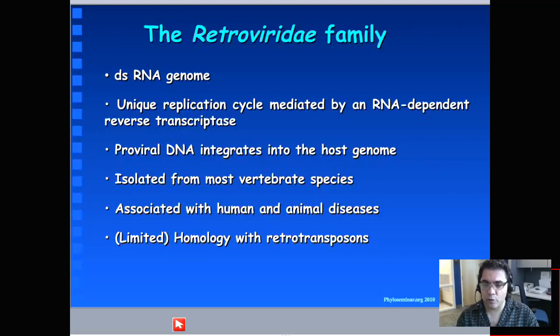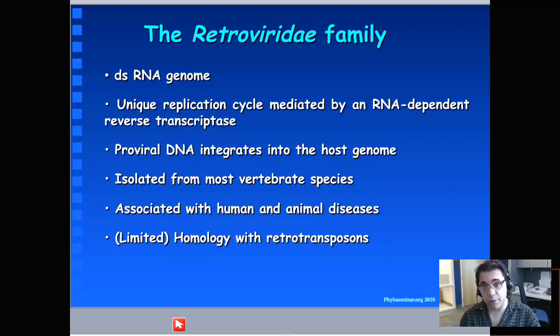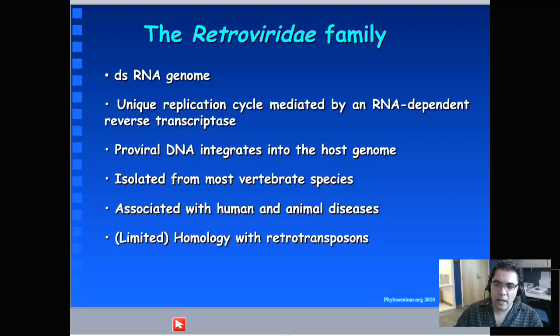They have a single-stranded RNA genome, but they are actually diploid — each virion contains two copies of RNA. They have a unique replication cycle mediated by the RNA-dependent reverse transcriptase, and they are pretty ubiquitous in nature, isolated from most vertebrate species. They are associated with significant human and animal diseases, and they have limited homology with retrotransposons and endogenous retroviruses.